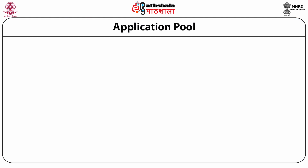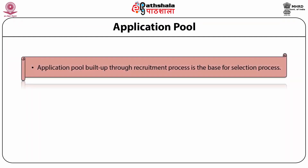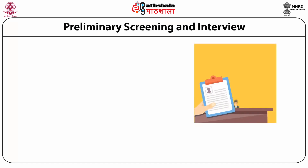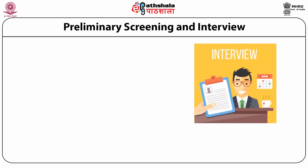The first step of the selection procedure is the application pool. It is a device developed by the recruitment process and is the base for the selection process. The basic objective at the recruitment level is to attract as many worthwhile applications as possible so that there are more options available at the selection stage.